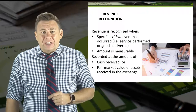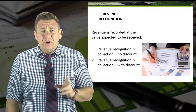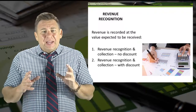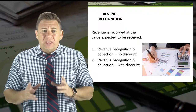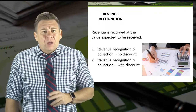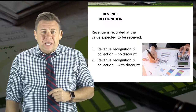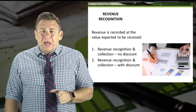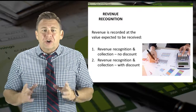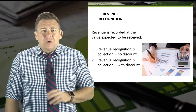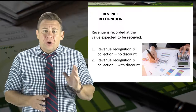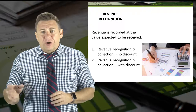Usually that will be cash, but not always. When recording revenue and the related receivable, the guidelines instruct us to record the amount at the value we expect to receive. Often this is the amount of the sale, but some companies offer customers discounts to encourage early payment. Let's look at examples of how the journal entries differ from those who offer discounts to those who don't.